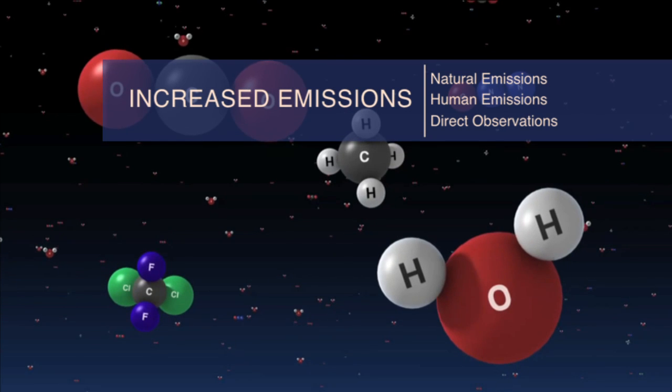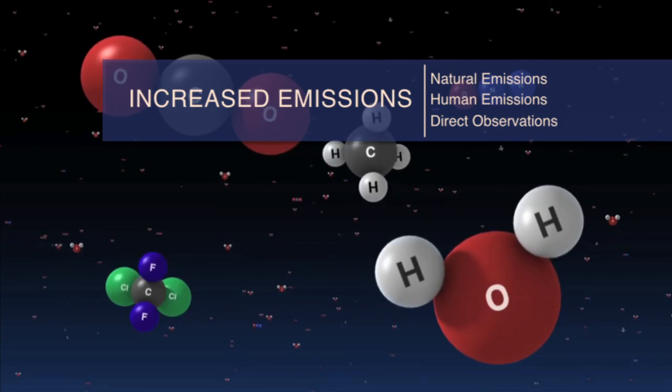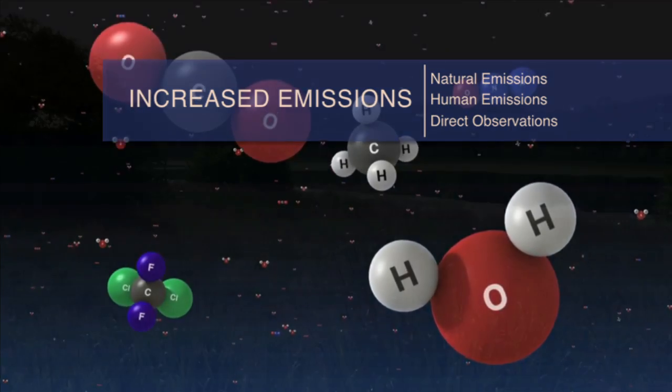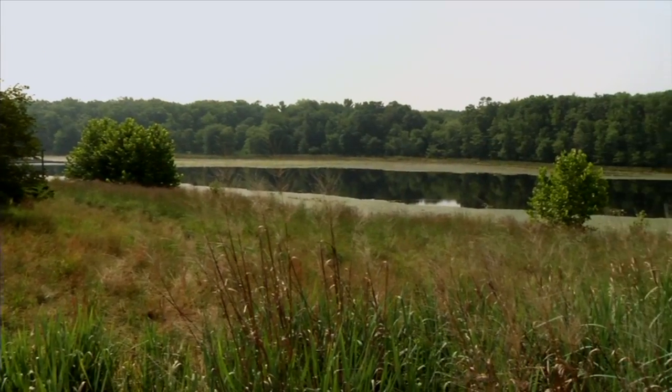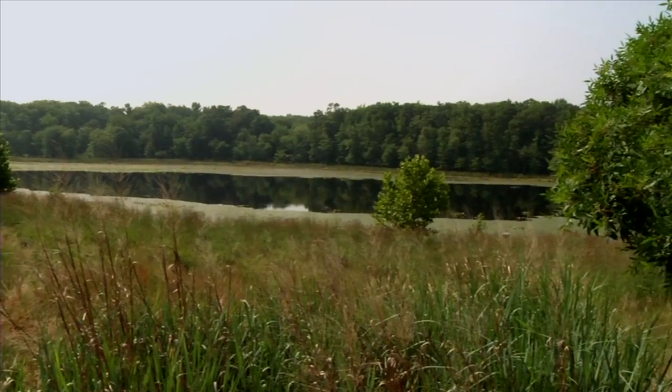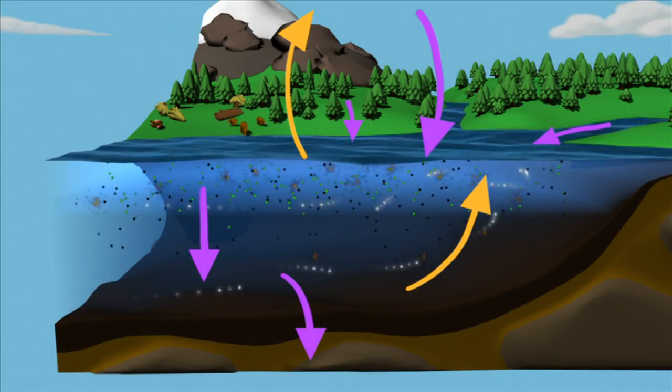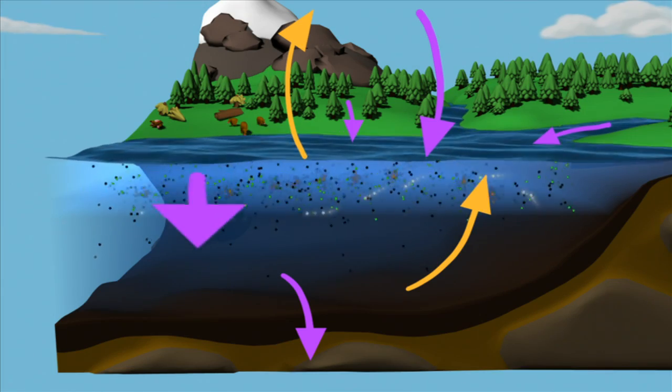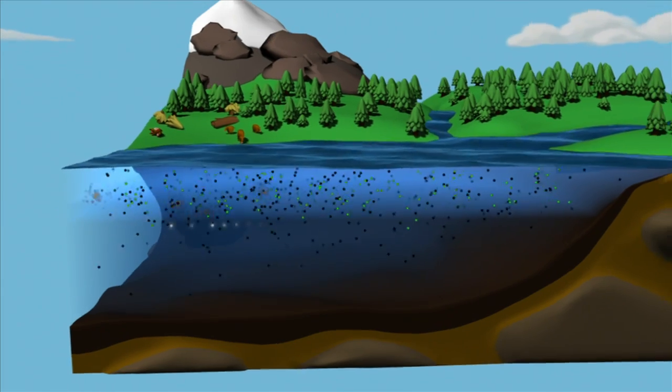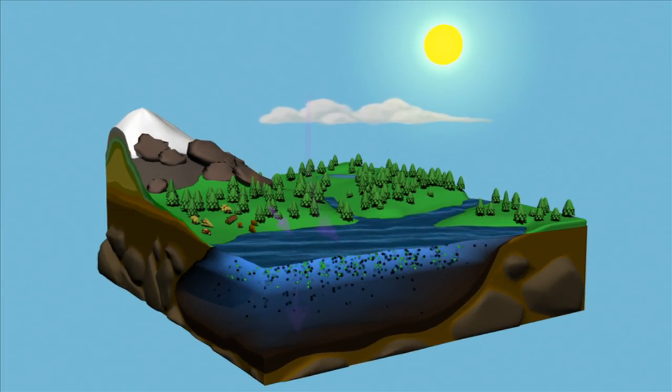How do we know humans are causing greenhouse gas concentrations to increase? Determining the human influence of greenhouse gas concentrations was challenging because many greenhouse gases occur naturally in Earth's atmosphere. Carbon dioxide is produced and consumed in many natural processes that are part of the carbon cycle.